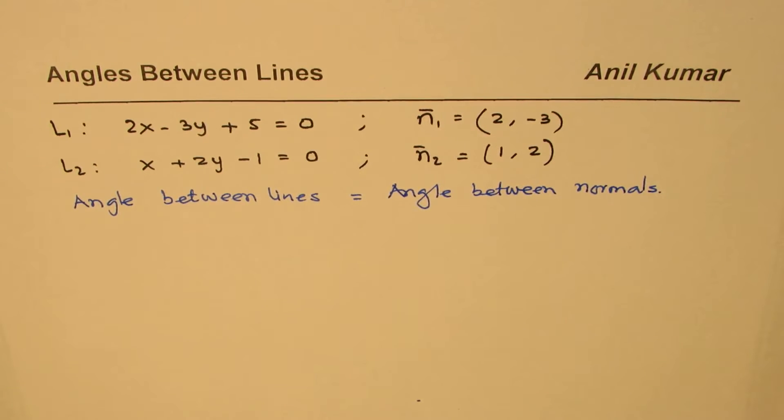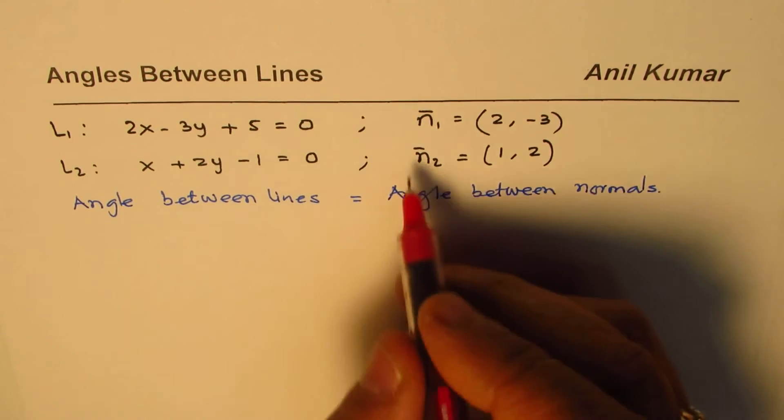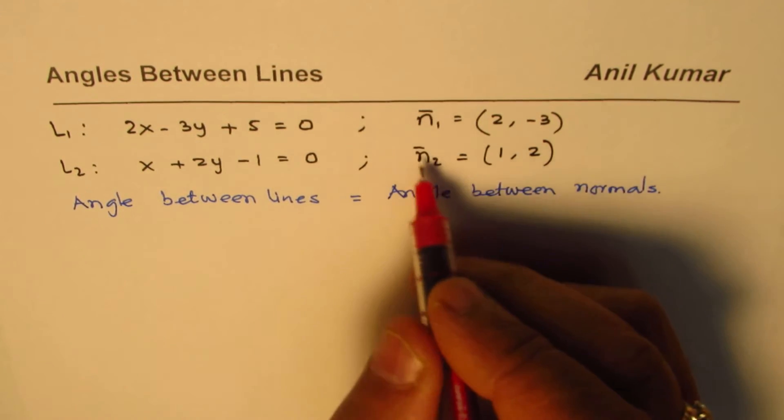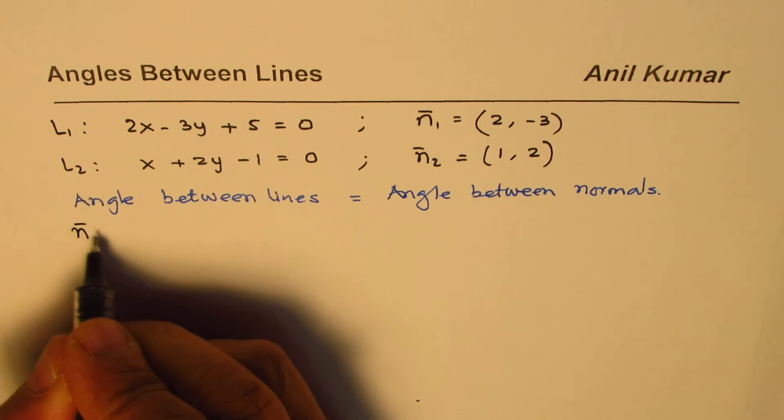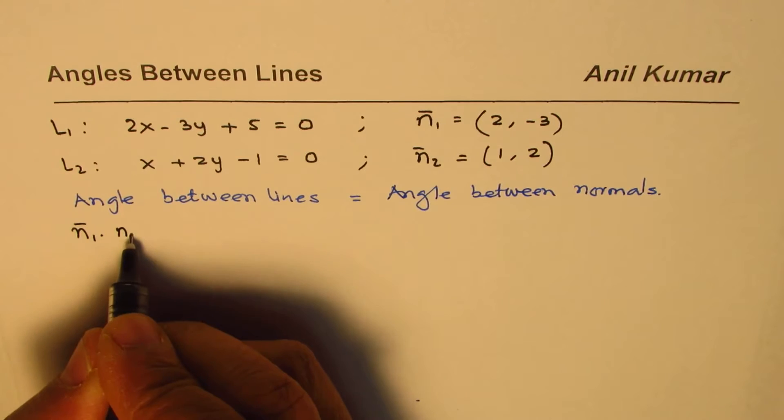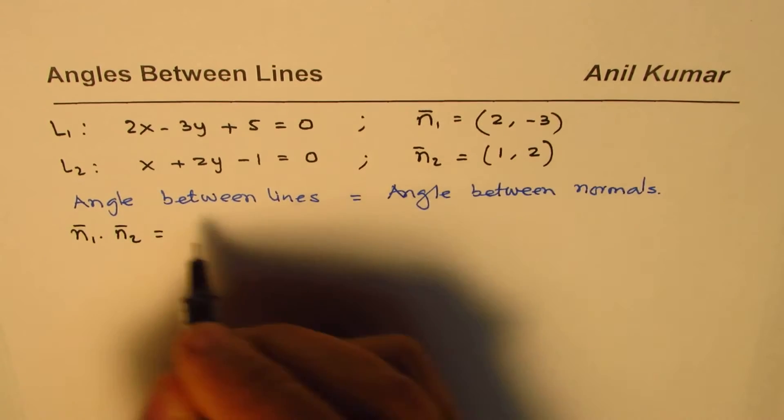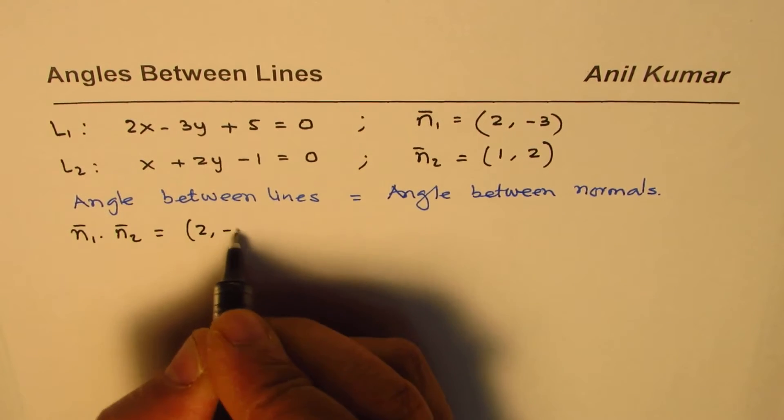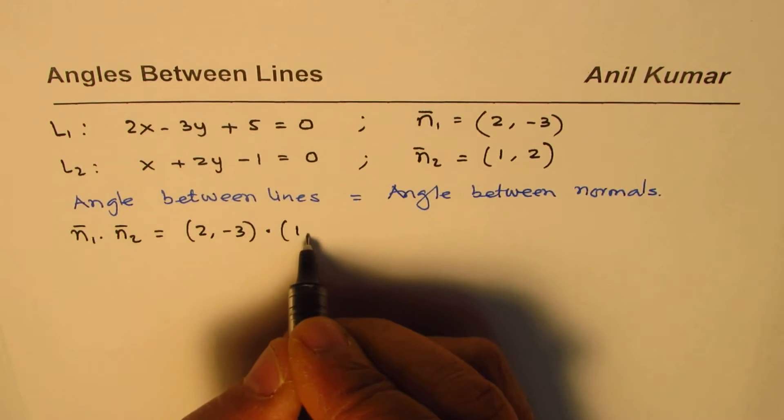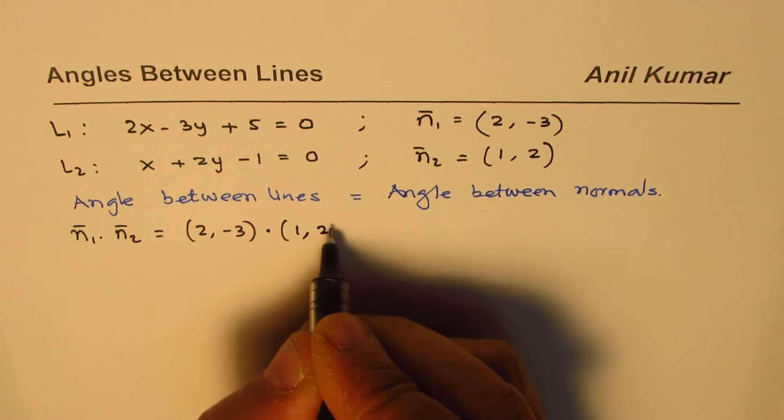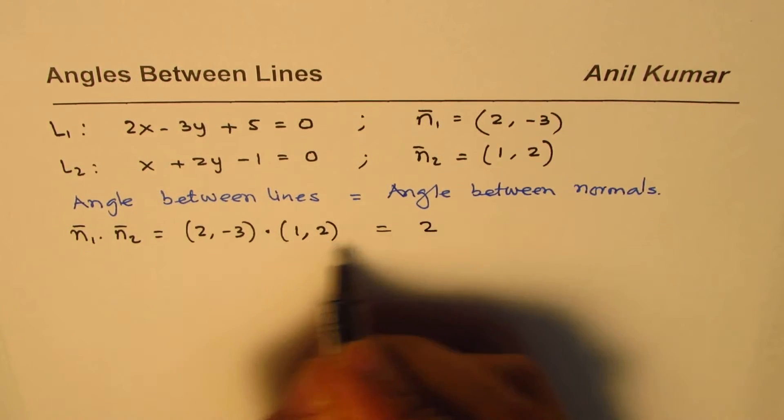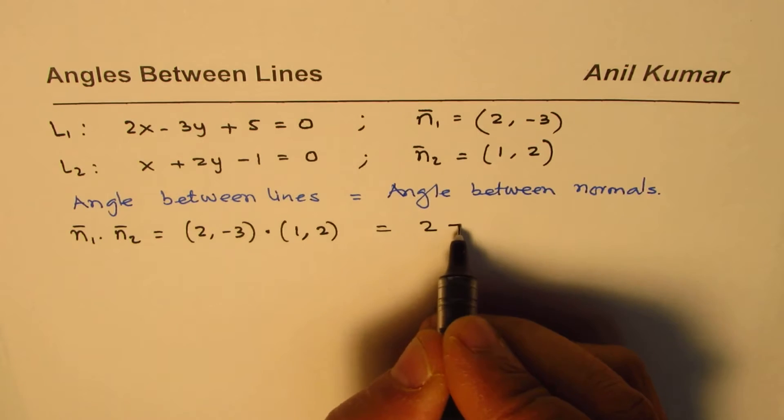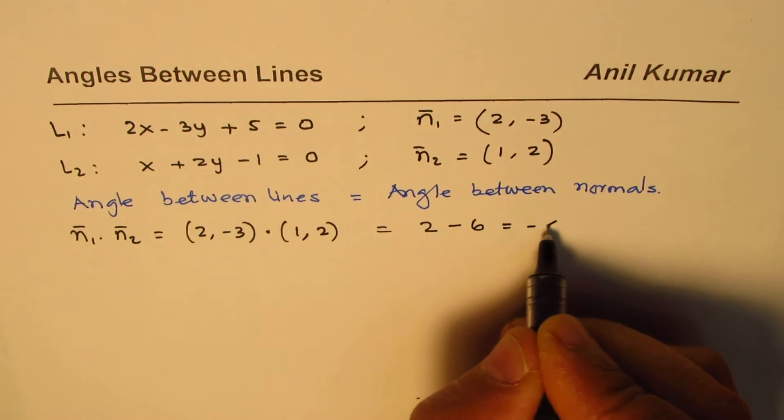And to find the angle between lines let me remind you what is the dot product. So if I find dot product of n1 and n2, it is 2, minus 3 dot 1, 2. So when you do dot product you get 2 times 1 as 2 plus minus 3 times 2 which is minus 6 and that is minus 4.